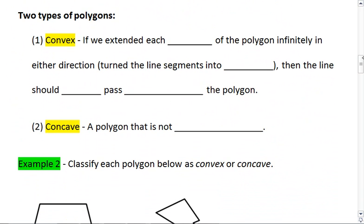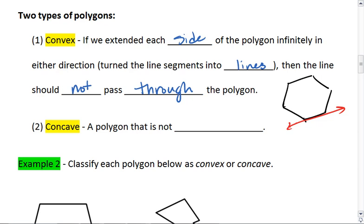We have two types of polygons that we'll look at. One is convex, and a polygon is convex if we extend each side of the polygon infinitely in either direction. So if we turn the line segments into lines, then the line should not pass through the polygon. Essentially, if I was to draw a convex polygon like the one you see on your screen, when I extend each of these lines, notice how none of the lines pass through the interior of my polygon. So that's convex.